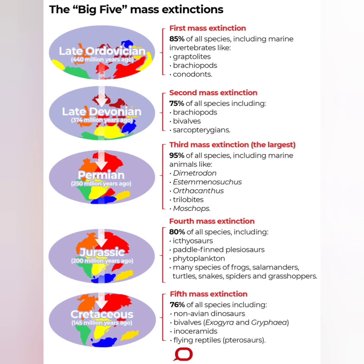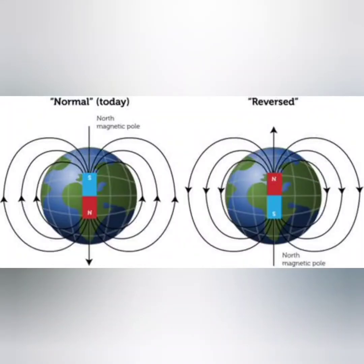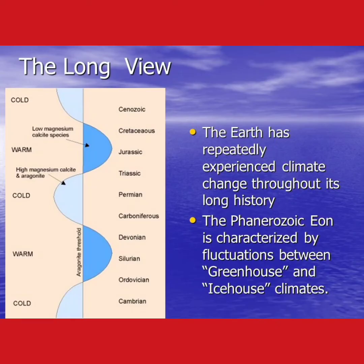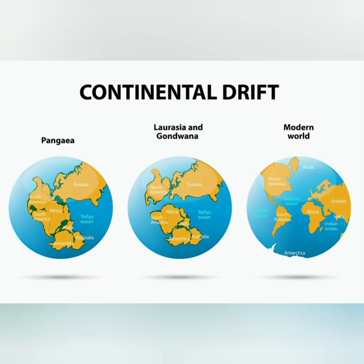Major glaciation caused global cooling and a decrease in sea level. Magnetic pole reversals are remarkable — the magnetic poles of Earth switch on an irregular basis, with the north pole becoming the south pole, then switching back on the next reversal. Earth's climate also shifted between hotter and cooler, drier and wetter throughout its history. Supercontinents were created when the majority of Earth's land masses came together as a single unit due to plate tectonics. Two major supercontinents occurred during the Phanerozoic Eon: Gondwana and Pangea.